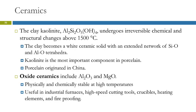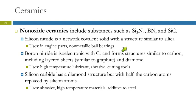There are also non-oxide ceramics: silicon nitride, boron nitride, and silicon carbide — notice there's no oxygen in these. Silicon nitride has a structure similar to silica, but it's silicon and nitrogen instead of silicon and oxygen. It's used in engine parts and for making non-metallic ball bearings.